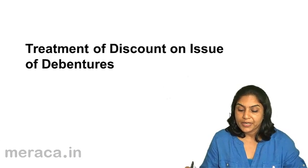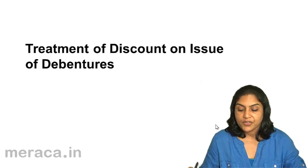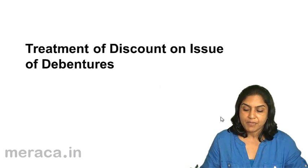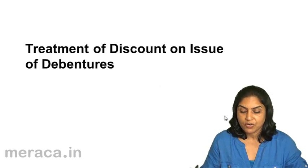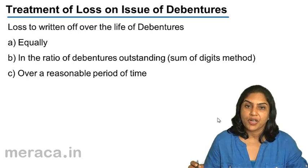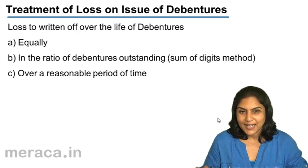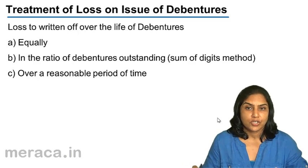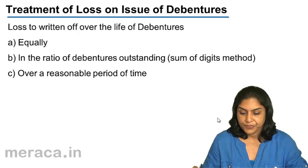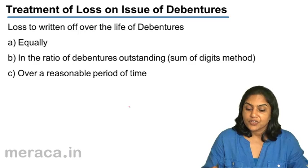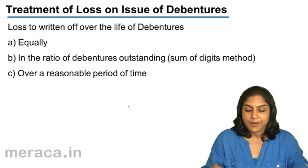Let us now move on to treatment of discount on issue of debentures. The treatment of discount on issue of debentures is exactly the same as loss on issue of debentures account. So sometimes only one account is maintained — the accounting treatment for both are exactly the same. This loss or discount is written off over the life of the debentures.